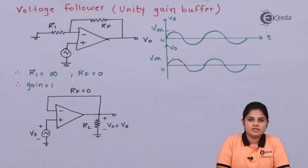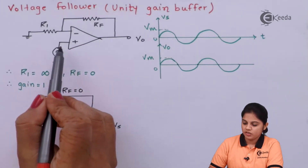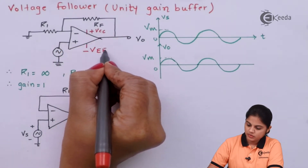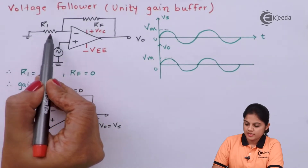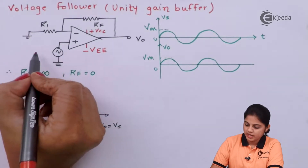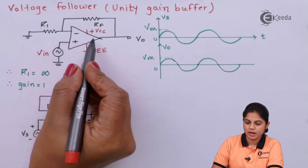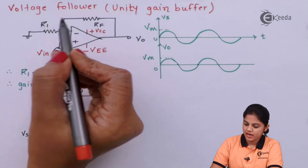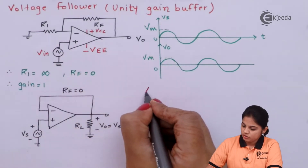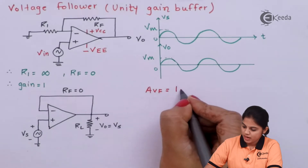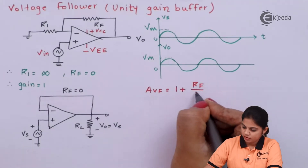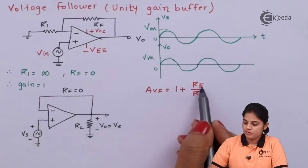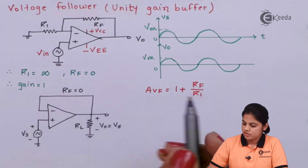Here we have a diagram showing the non-inverting configuration of an OPAMP, with plus VCC and minus VEE. The inverting terminal is connected through a resistance to the ground potential, and the input voltage is given to the non-inverting terminal. We have feedback resistance RF and input resistance R1. The closed-loop voltage gain of this amplifier is 1 plus RF divided by R1, since the closed-loop voltage gain of a non-inverting configuration is 1 plus RF over R1.